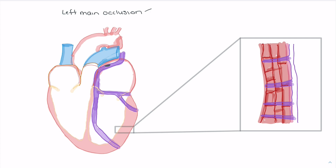Left main occlusion may be indicated in someone who has ST elevation in AVR — fairly extensive ST elevation in AVR combined with otherwise widespread depression, which is a fairly unique finding. We can look at what is happening anatomically to see why that might be the case. This grayed out area here represents the reduction in blood flow from the left main coronary artery.